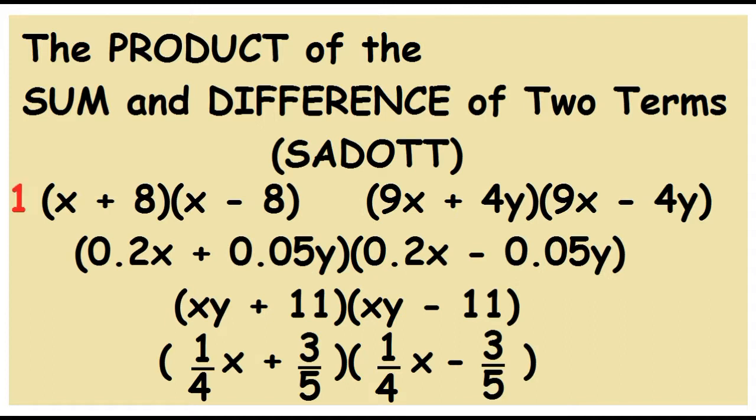1. The quantity x plus 8 times the quantity x minus 8. 2. The quantity 9x plus 4y times the quantity 9x minus 4y.